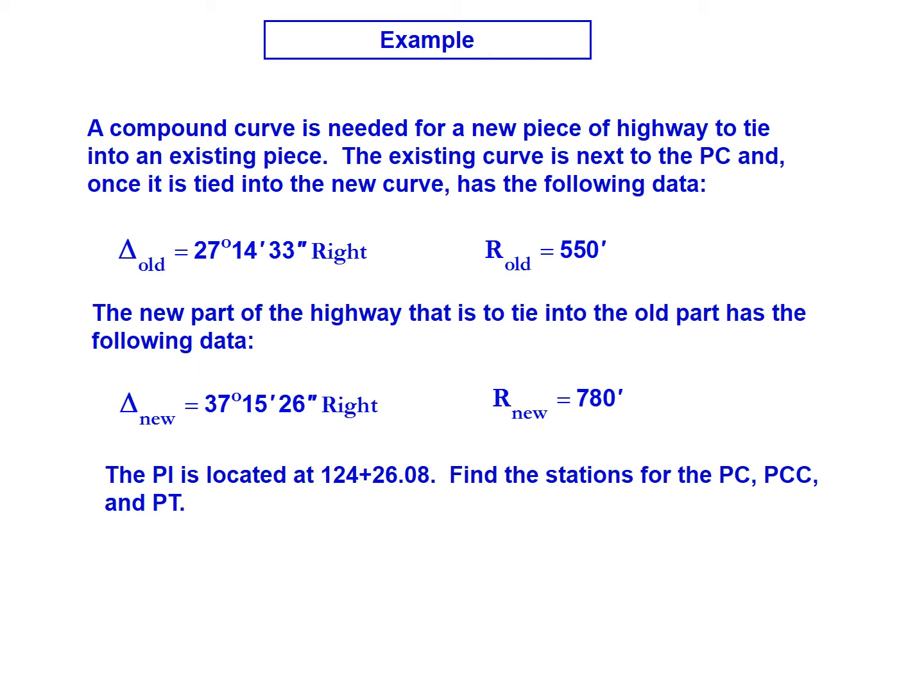The new piece of the highway that's going to tie into that older piece has characteristics with a delta of 37 degrees 15 minutes 26 seconds, again to the right, and a new radius of 780 feet.